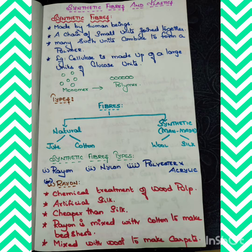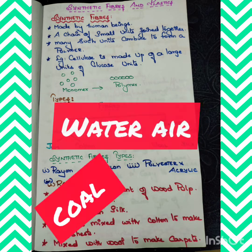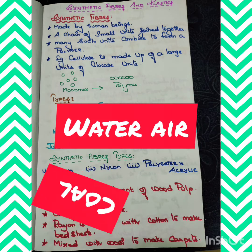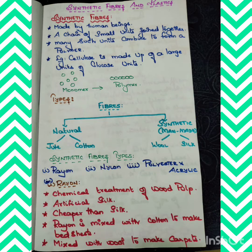Nylon is the first fully synthetic fiber, or man-made fiber. The ingredients used for nylon are coal, water, and air. Characteristics: nylon is very strong, elastic, light, lustrous, and easy to wash.